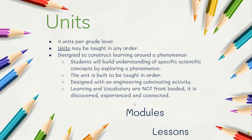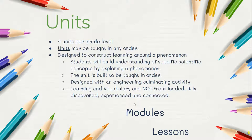Every grade level has four units presented. The units may be taught in any order. It's designed to construct learning around phenomena — students will build understanding of specific scientific concepts by exploring phenomena. The unit is built to be taught in order, so you're not going to take the pieces of the unit and rearrange them because they're designed for the progression of learning and repeated experiences around similar concepts. They're designed with an engineering culminating activity known as the STEM activity. Learning and vocabulary are intentionally not front-loaded — they're meant to be discovered, experienced, and then connected to the experiences that students have.